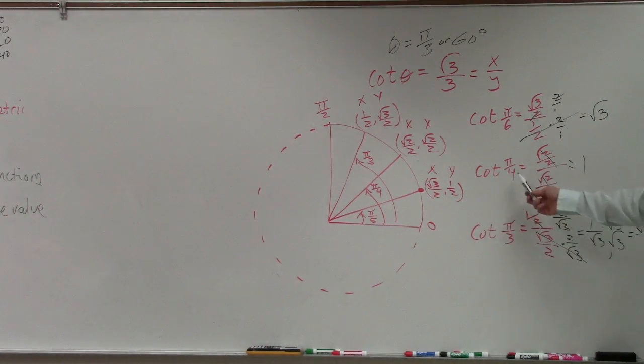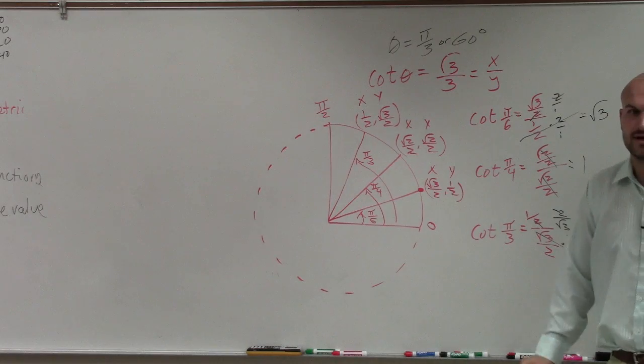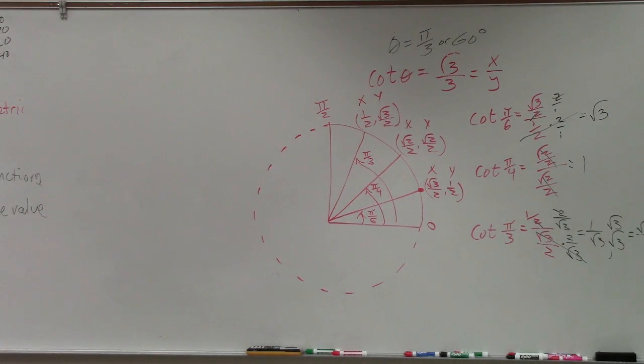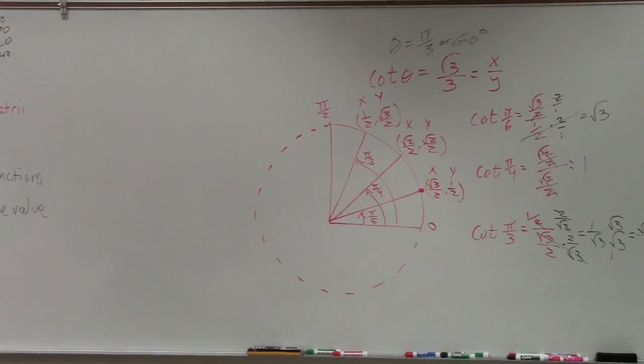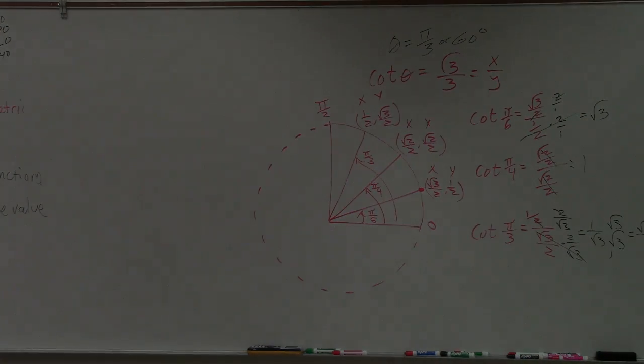Because then you know it has to be pi over 4. But when it's not that, it's either going to be pi over 6 or pi thirds when we're talking about the first quadrant. Yes? Will these numbers always stand at pi over 6 and pi over 6?